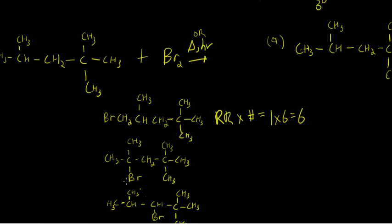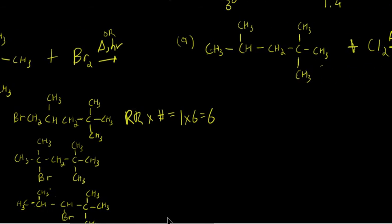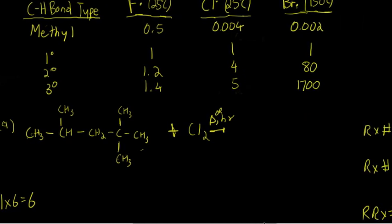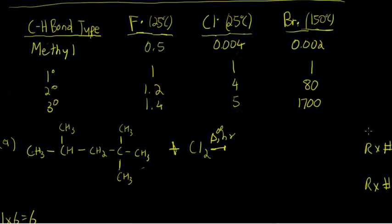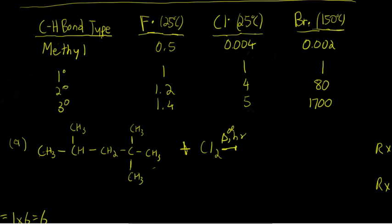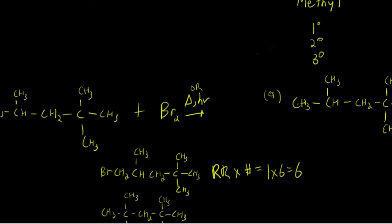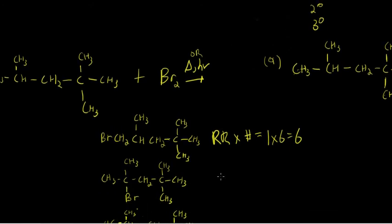For this tertiary product, referring to the table, the relative reactivity of bromine for tertiary hydrogens is 1,700 — again, relative to one for primary hydrogens. So relative reactivity times the number is 1,700 times one, which gives 1,700.